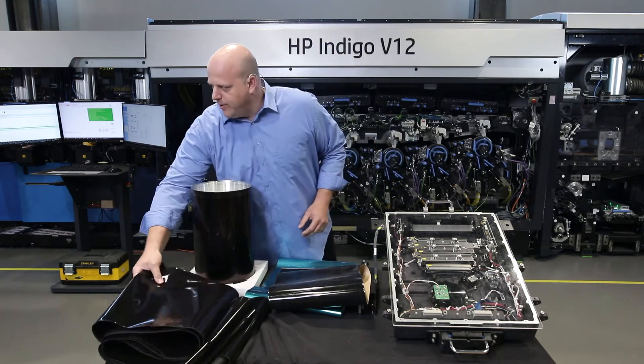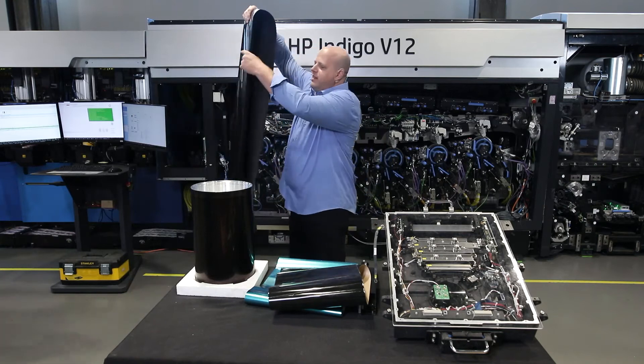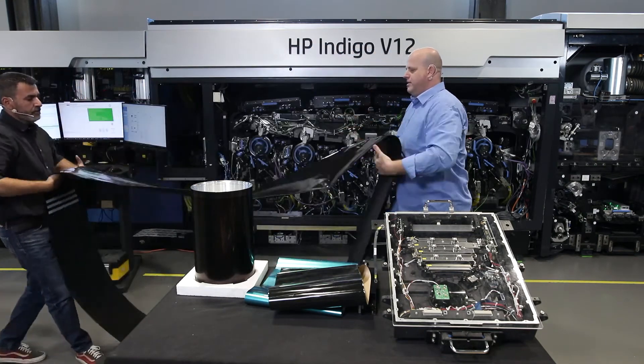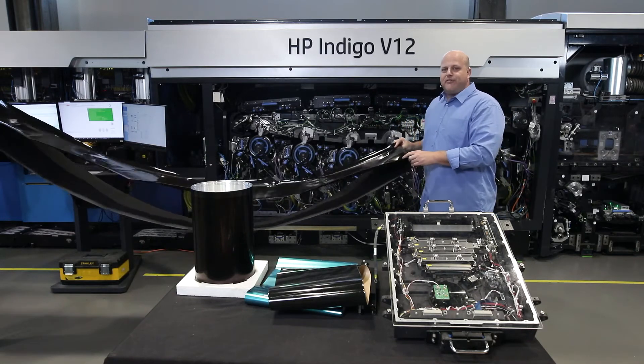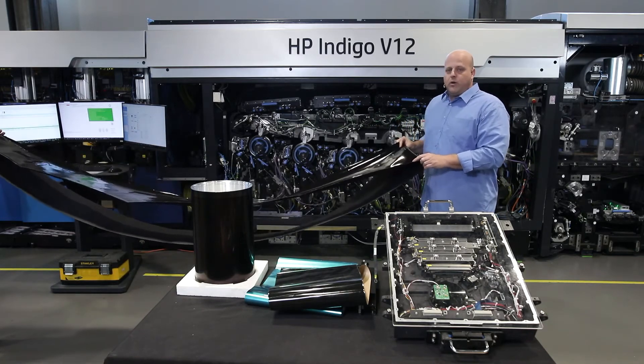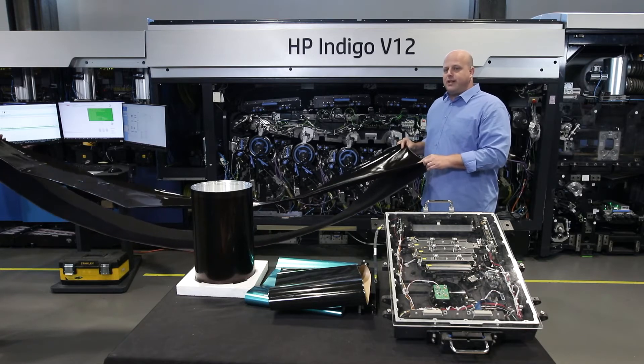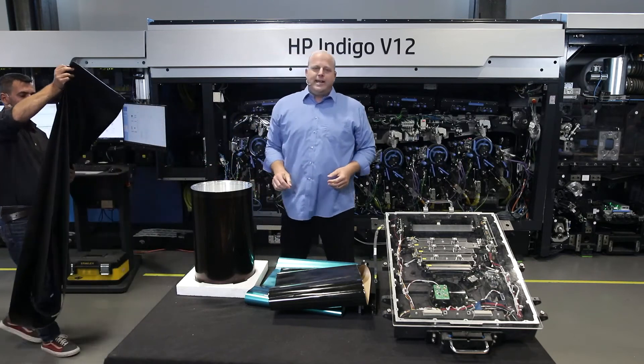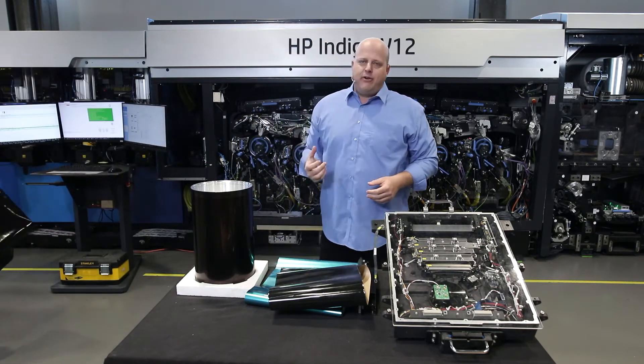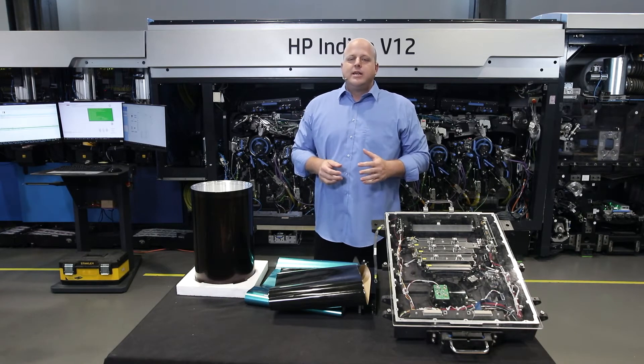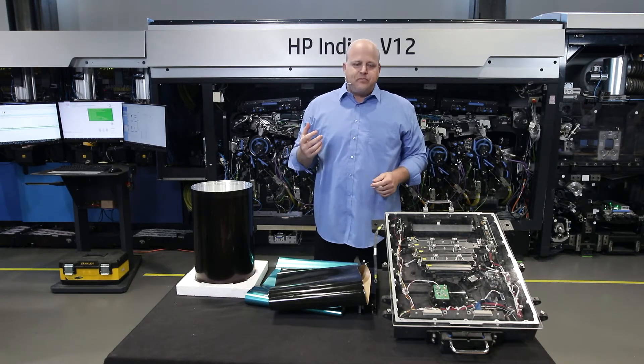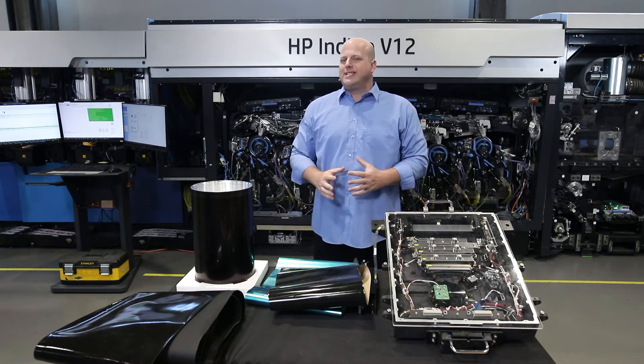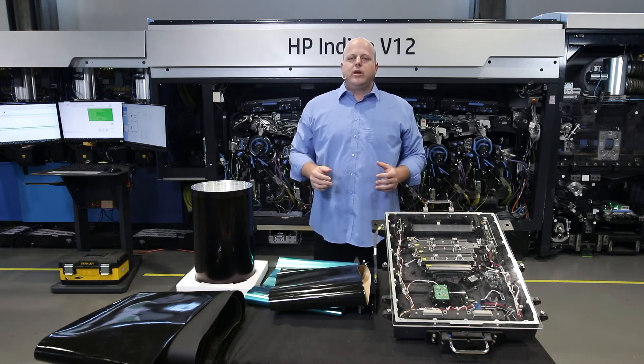So I'm holding here in my hand the V12 blanket. Quite long - it's nearly 5.5 meters long, which enables you better frame utilization, about 10 or 20 percent better frame utilization. And in addition, it's much tougher and more robust than the blanket of Series 3, so the lifespan of the blanket will be significantly longer. And in the future plan, we are working on a stitchless blanket in which you can go fully rotary.